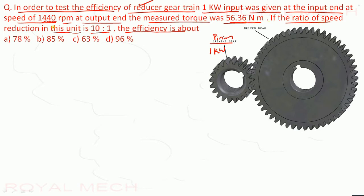The ratio of speed reduction in this unit is 10 is to 1. So for every 10 revolution of this, there is 1 revolution of this gear. So it is 10 is to 1.